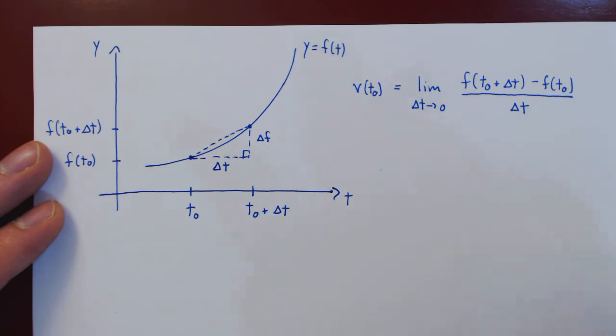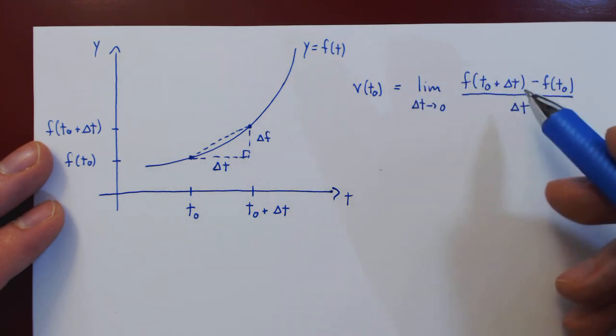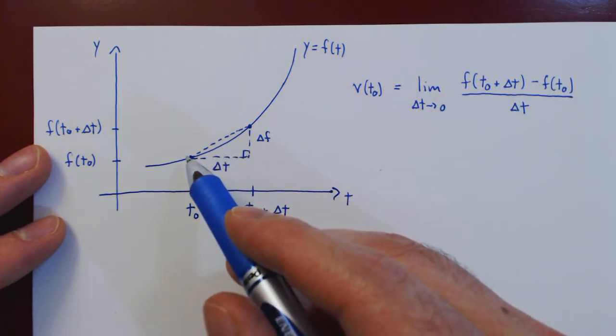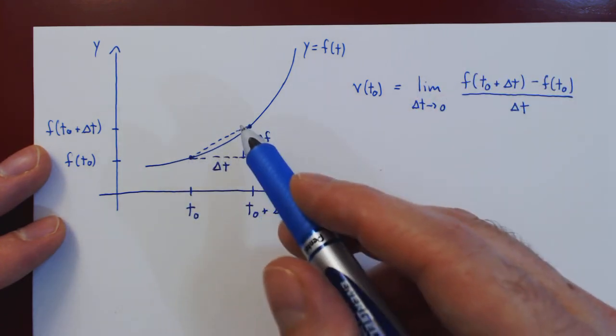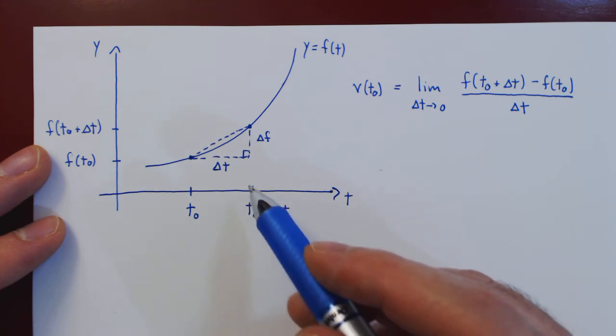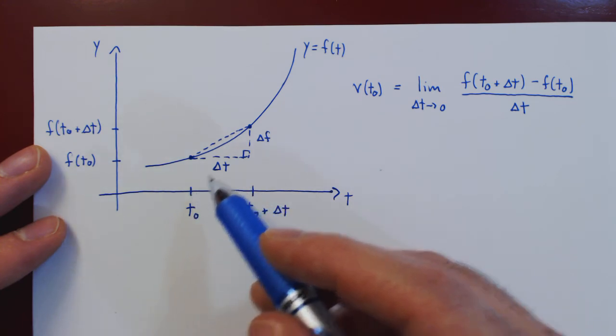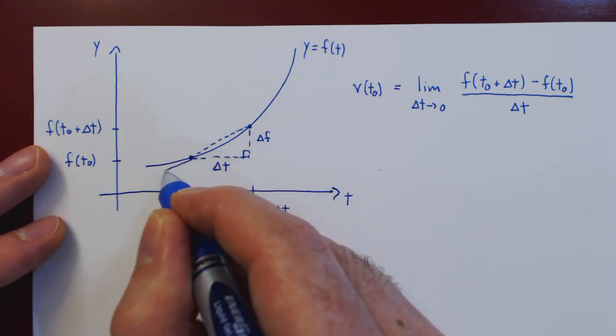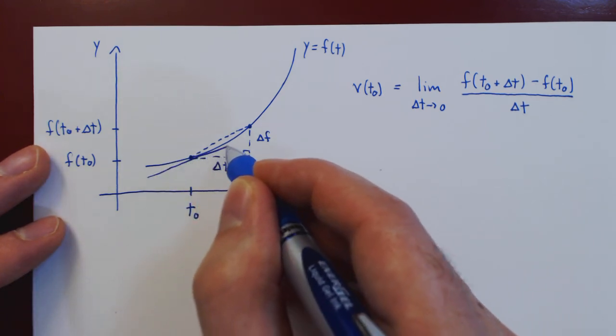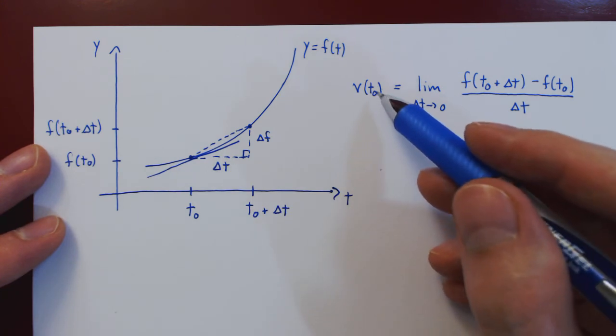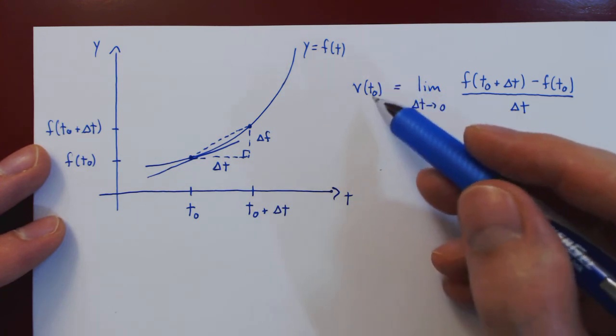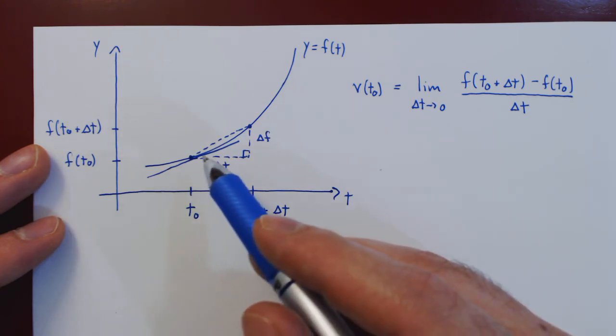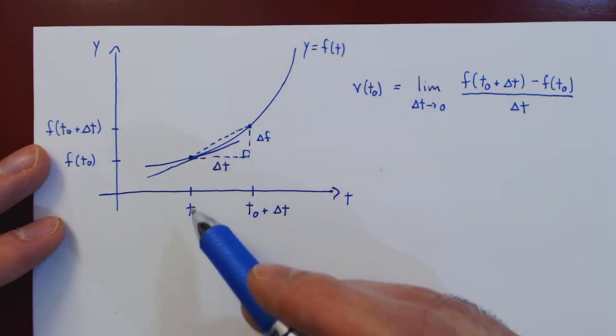And again, this formula is equivalent to the previous formula. Geometrically, as the slope of this line represents the average velocity, as delta t shrinks to 0, the point approaches t0 here, so this point approaches this point here. Geometrically, the instantaneous velocity of the object at the point t0 is the slope of the position function at the point t0.